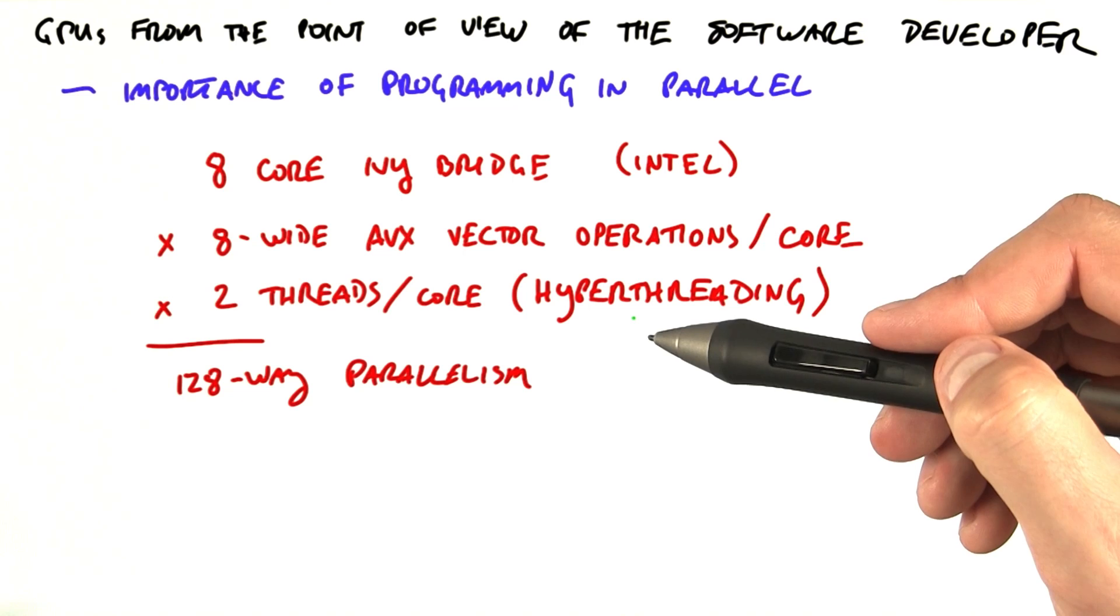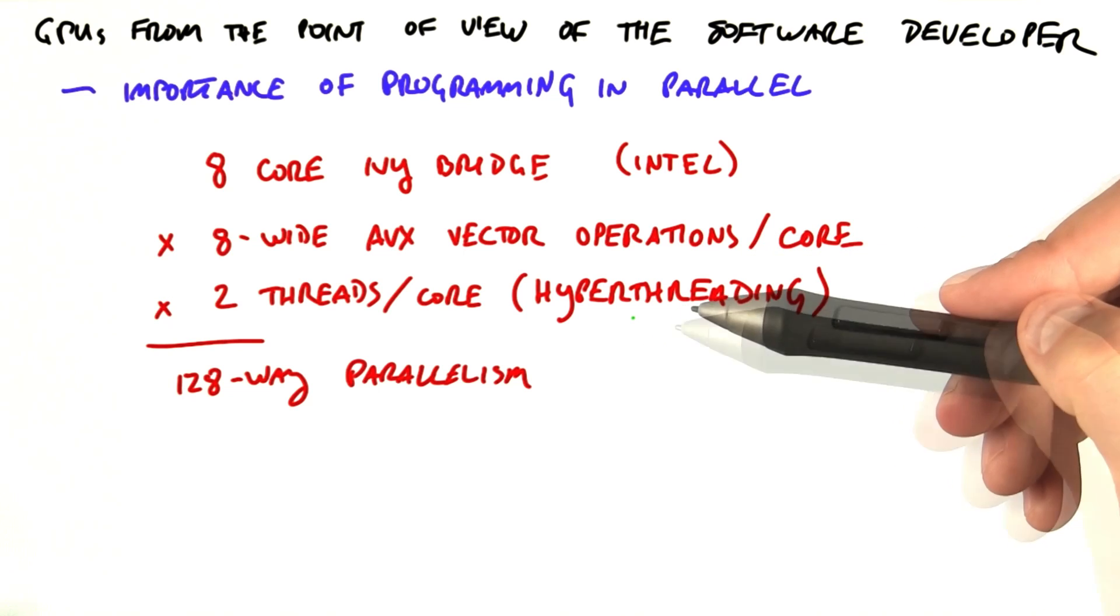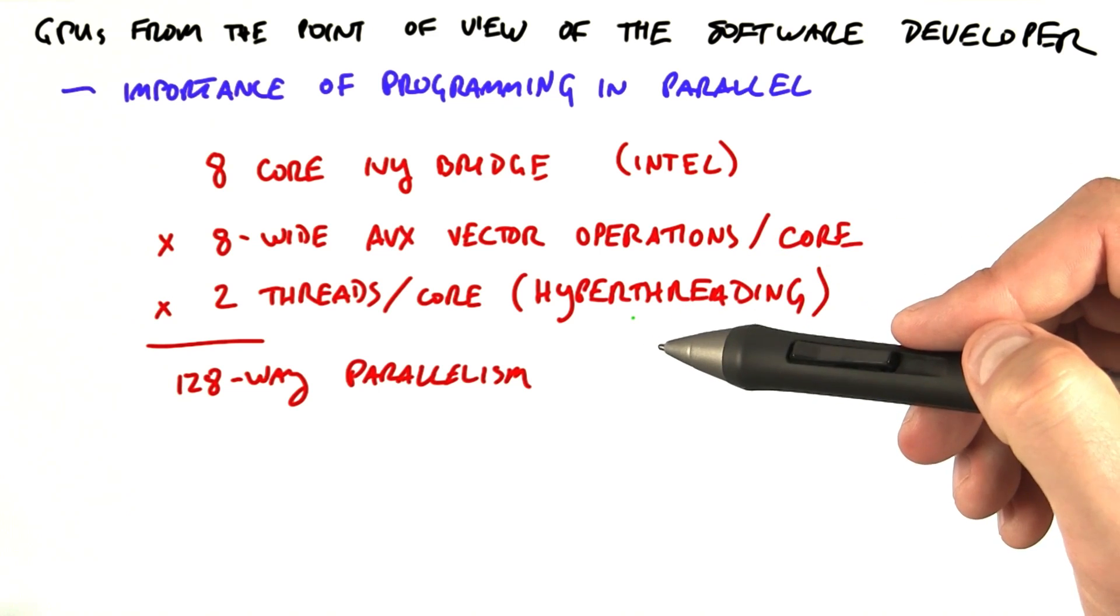On this processor, if you run a completely serial C program with no parallelism at all, you're going to use less than 1% of the capabilities of this machine.